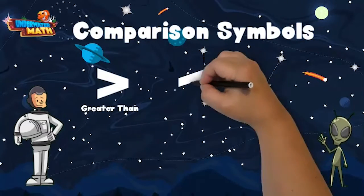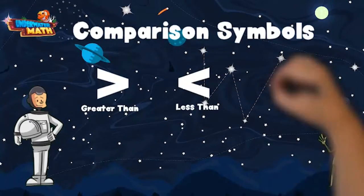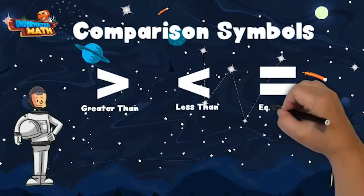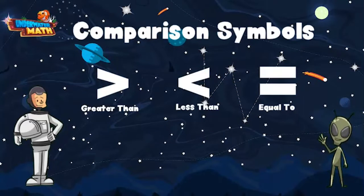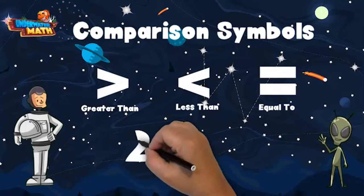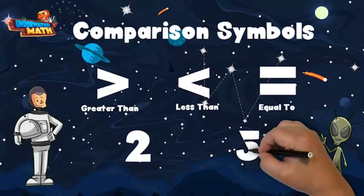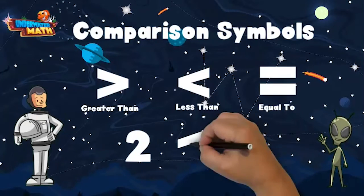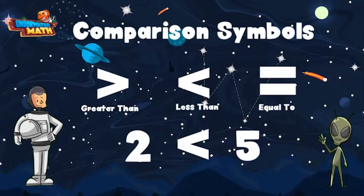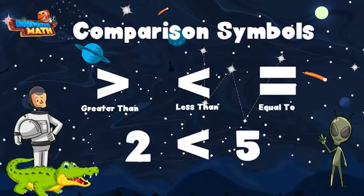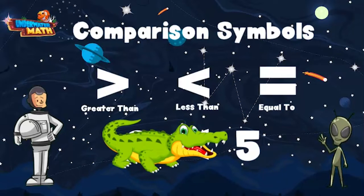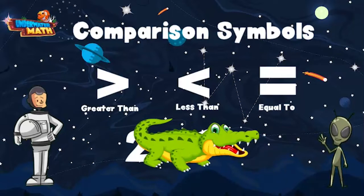We have greater than, less than, and equal to. The comparison symbol always wants to open up to the larger number. For example, if we compare the numbers two and five, we would use the less than symbol because it opens up to the five. I've always thought of it like an alligator — the alligator always wants to eat the bigger number. Chomp!